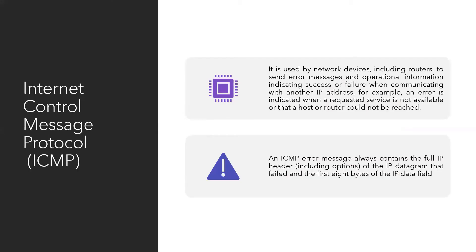Internet Control Message Protocol — ICMP — is used by network devices including routers to send error messages and operational information indicating success or failure when communicating with another IP address. For example, an error is indicated when a requested service is not available or a host or router could not be reached. An ICMP error message usually contains the full IP header including options of the IP datagram that failed, and the first eight bytes of the IP data. Common tools that utilize ICMP include the ping command and the traceroute command.